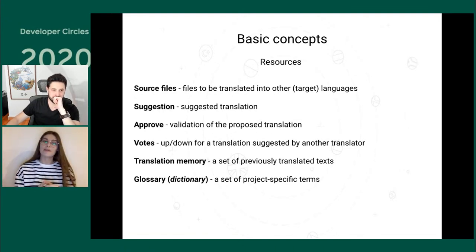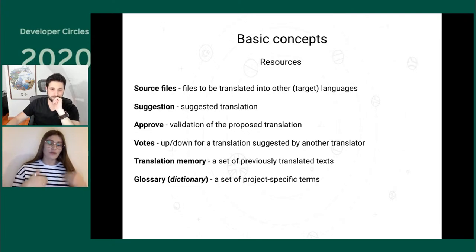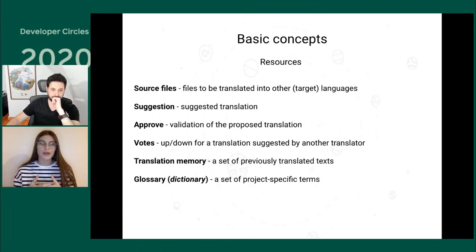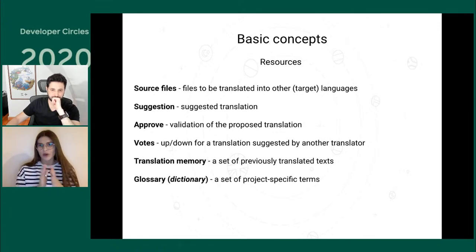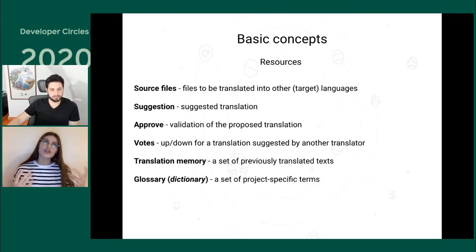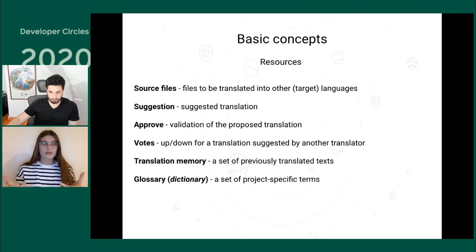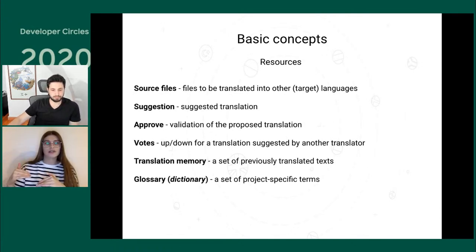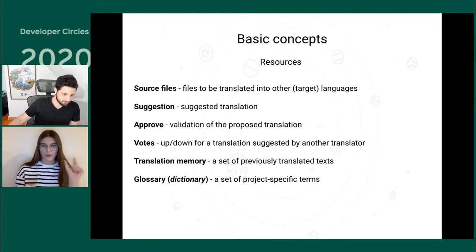In terms of resources, first on the list are source files — the files we need to translate from our source language to the target language. Source files consist of keys, like identifiers, and source values — localization elements we get from our code that need to be translated. Crowdin is file-based, so we expect files to be uploaded, but we can also work with single keys. A suggestion is simply a proposed translation; in crowdsourced projects, you can have multiple translation suggestions added to a single string, and you need to pick one.